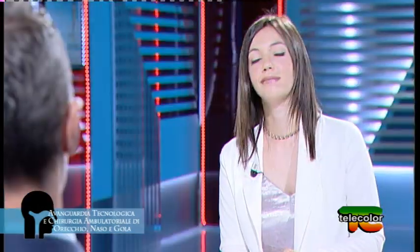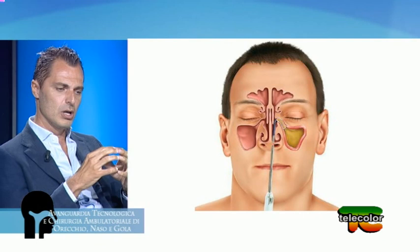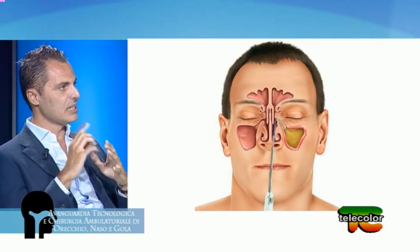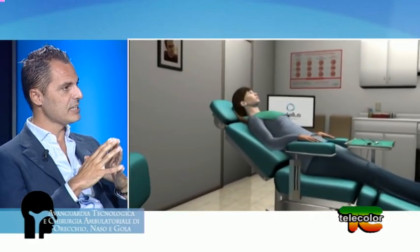Il sistema della plastica balloon è sempre sul minimamente invasivo ed estremamente conservativo. È uno degli interventi che negli ultimi anni ha modificato l'atteggiamento degli otorinolaringoiatri. Prende ispirazione dalla cardiochirurgia e dalla chirurgia vascolare, dove si usa uno stent per mantenere dilatato il lume di un vaso. Per la plastica balloon dilatativa degli osti dei seni paranasali utilizziamo un palloncino riempito di soluzione fisiologica per dilatare in modo definitivo il foro di scarico del seno mascellare, del seno frontale e dell'etmoide.